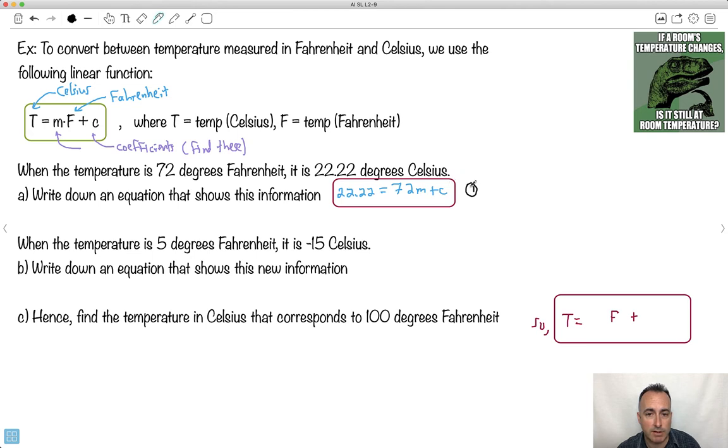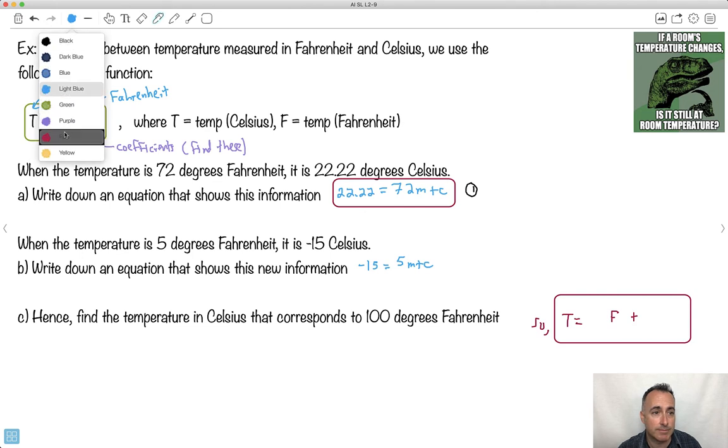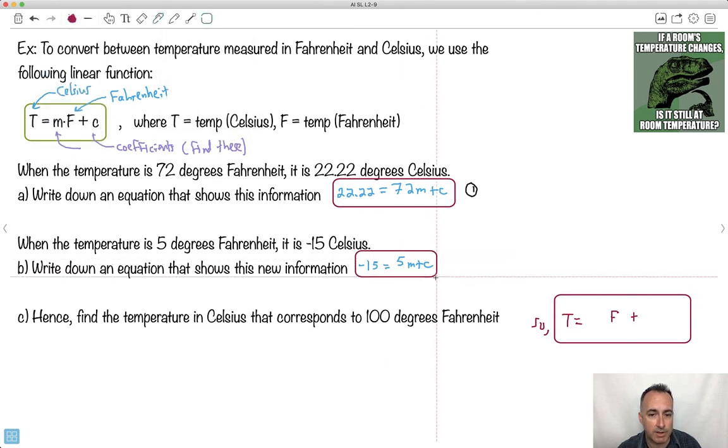Now we have some more information. When the temperature is 5 degrees Fahrenheit, it's minus 15 Celsius. Write a new equation. Same idea, except we put in minus 15 here for the temperature: -15 equals 5 degrees Fahrenheit times m plus c. I have a second equation. And by the way, exam questions are often written like this. If this is your IA, you have to figure out what your data points are. But in an exam question, it could easily be like this. They often set up situations, they sort of hold your hand a little bit through it.